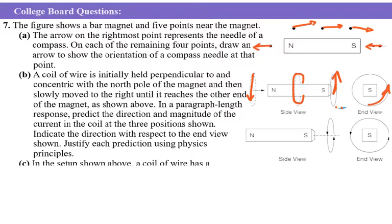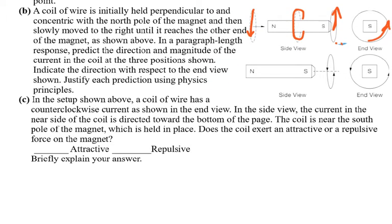For part C, in the setup shown, a coil of wire has counterclockwise current as shown in the end view. In the side view, the current in the near side of the coil is directed toward the bottom of the page. The coil is near the south pole of the magnet which is held in place. Does the coil exert an attractive or a repulsive force on the magnet? In this question, the current is already present in the coil going in this direction.